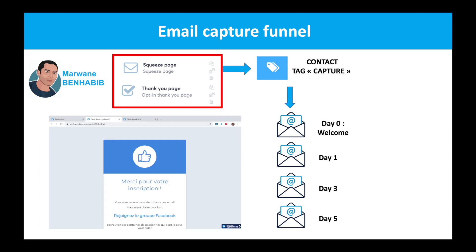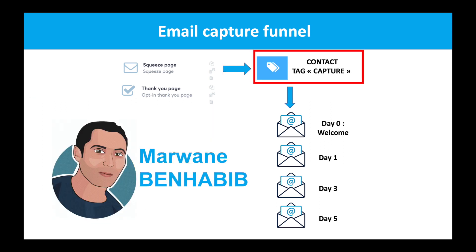Once he subscribes to your email list, you will create what we call a tag on System.io. What's a tag? It's a kind of contact list to identify a prospect or a contact.